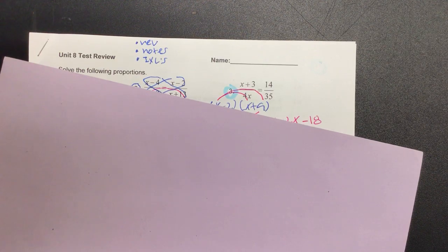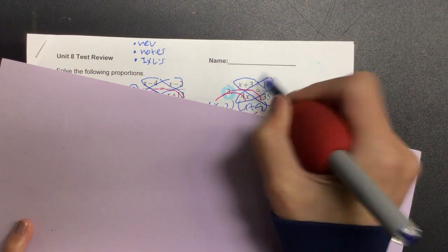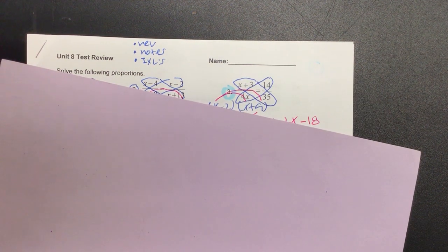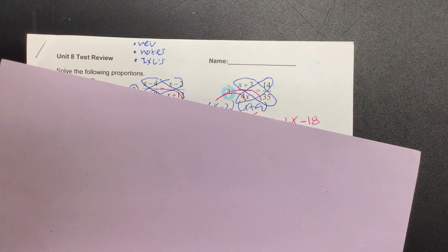So for number 3, we need to cross-multiply. What is 14 times 4? Let's see, 14 times 4, 56.